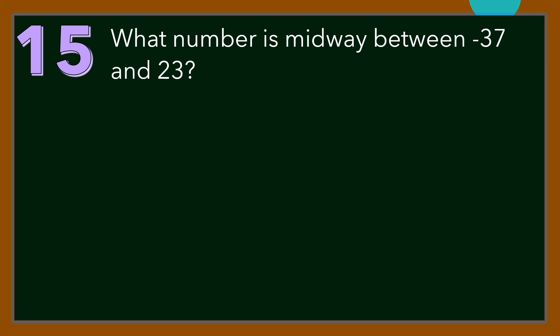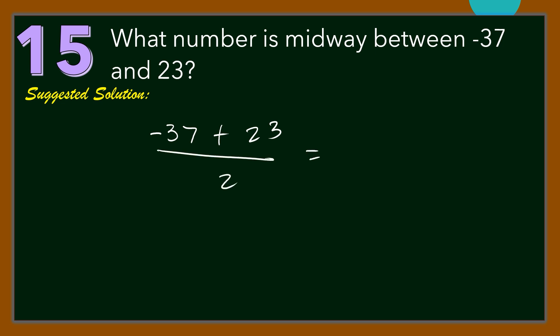Number 15. What number is midway between negative 37 and 23? For our solution, let us get the average of negative 37 and 23, and that will be the number midway between these two. So we have negative 37 plus 23 divided by 2, which is negative 14 divided by 2. The answer is negative 7.